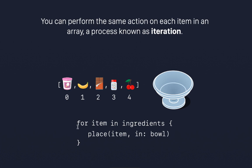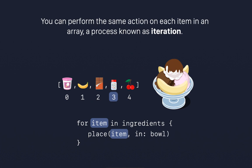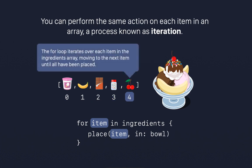We use the keyword for and then create a loop variable called item, followed by the keyword in and then the array name. So from the array of ingredients we take each item and on each item we perform the command place. So the first item will be taken and placed inside the bowl. Each item will be taken and placed in the bowl until we reach the end of the array. The for loop started from 0 and went to 4, which is the last element, and then it stopped. This process is called iterating.